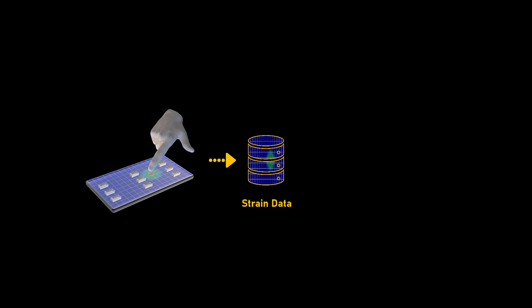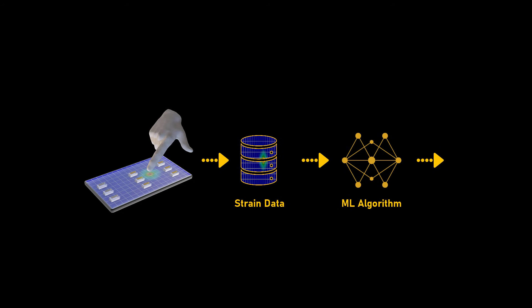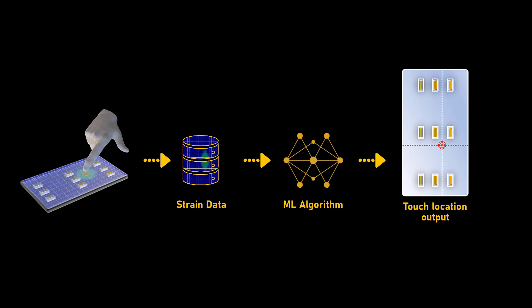Once the strain data is obtained in digital format, a machine learning algorithm can be employed to process and interpret this data, giving back the location and amount of force applied. Thus, an ML algorithm needs to be designed and trained to learn from the patterns and characteristics of the touch input.